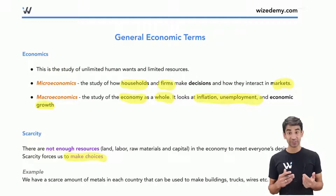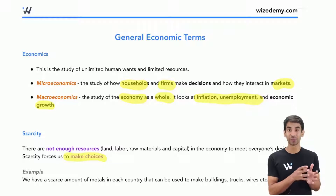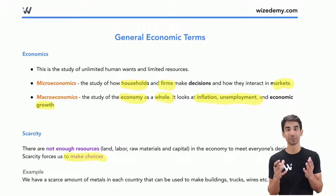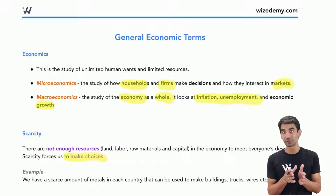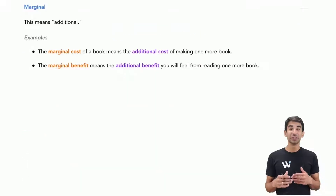For example, if we have a scarce amount of metals, we have to figure out how much to use to make buildings, trucks, or wires. We can't make an unlimited amount of buildings or trucks. So we need to think about how to use those metals based on each country's needs. That's what scarcity looks at, which is a key concept from economics in general.